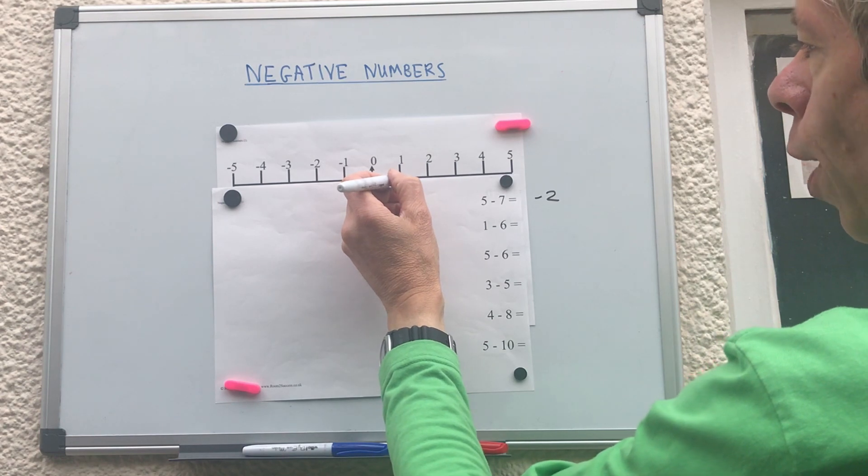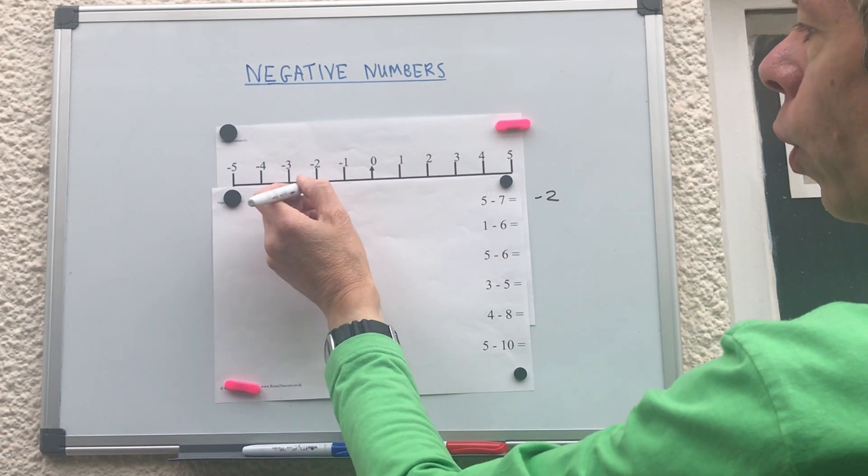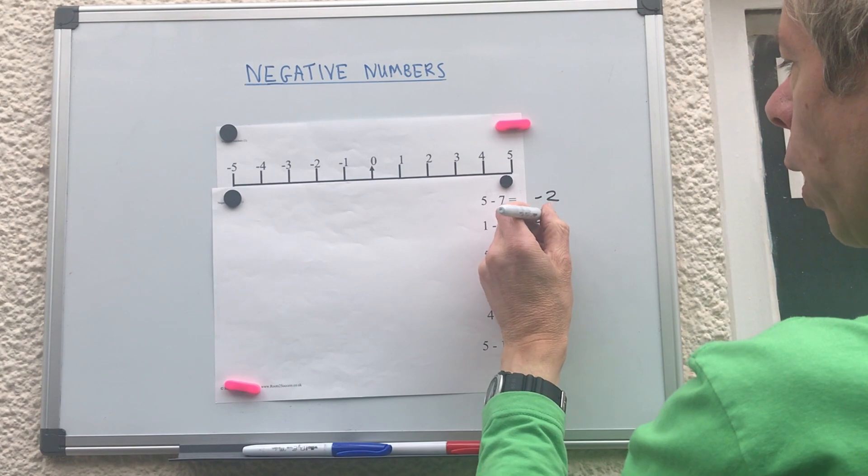One take away six. So start on one, go back six. One, two, three, four, five, six. So we've got minus five.